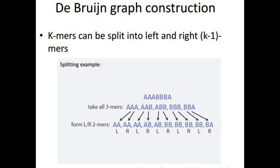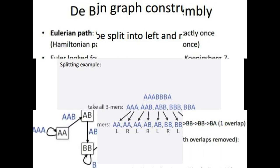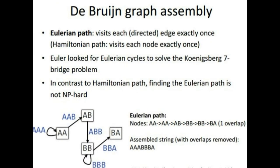So basic principle here is that we find a Eulerian path which visits each edge exactly once. In comparison, Hamiltonian path visited each node exactly once. So Euler problem is going to be not NP-hard. This is going to be a linear solution without the need for a heuristic.